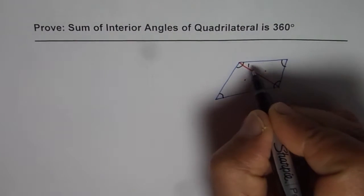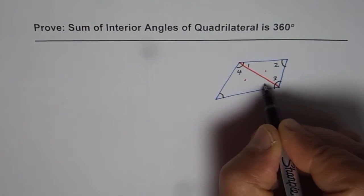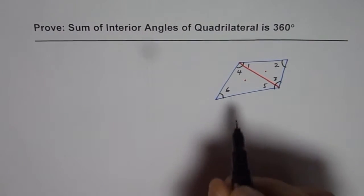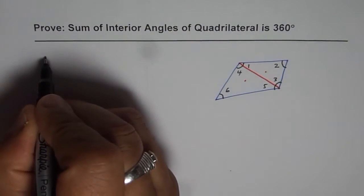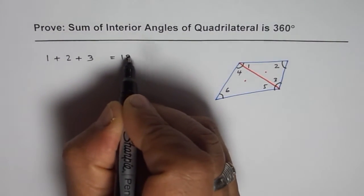So one triangle, we have got these three angles: one, two, three. The other triangle: four, five, six. Now we know that angle one plus two plus three is 180 degrees.